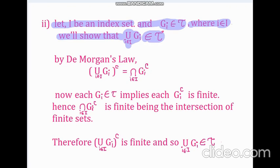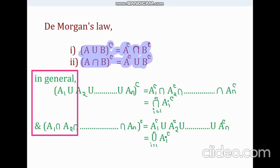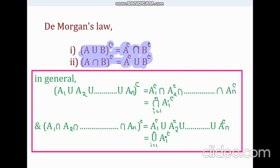Now, try to recall De Morgan's law. De Morgan's law about two sets, namely a and b, says that the complement of a union b equals the complement of a intersection complement of b. And the complement of a intersection b equals the complement of a union complement of b. De Morgan's law can also be generalized for n number of sets, as written here in green color, which we are going to use in our proof.